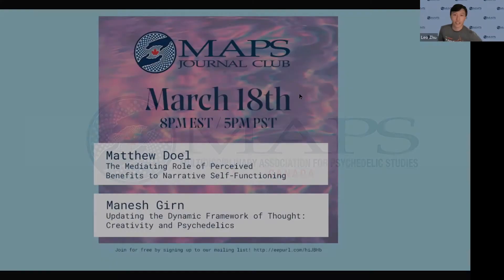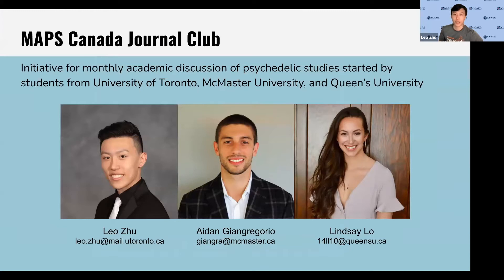The Maths Journal Club is a monthly academic discussion of psychedelic studies started by students from University of Toronto, McMaster, and Queen's University.